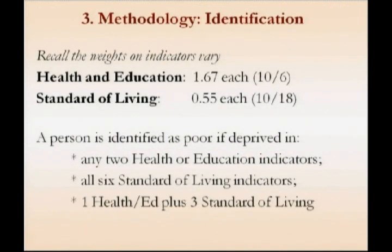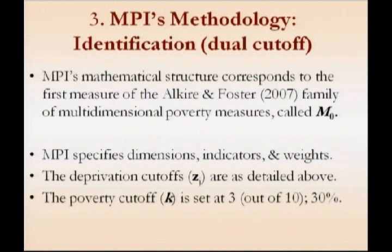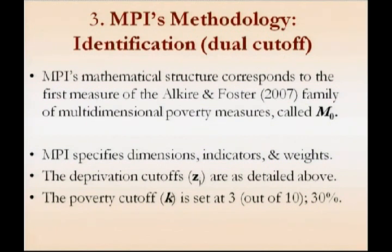The 30% cutoff: we calculated the MPI for all 10 percentile cutoffs — 1 through 10. Because this was an international exercise, we looked for a good range among the 104 countries in the MPI values and looked at what seemed to be reasonable in terms of the distribution. That's how we set it, and we'll show robustness tests at the end.